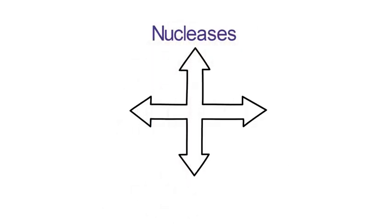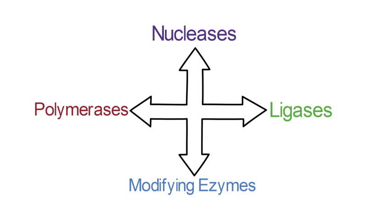Nucleases are enzymes that cut, shorten, or degrade nucleic acid molecules. Ligases join DNA molecules together. Polymerases make copies of DNA molecules, and modifying enzymes remove or add chemical groups to the DNA molecule.